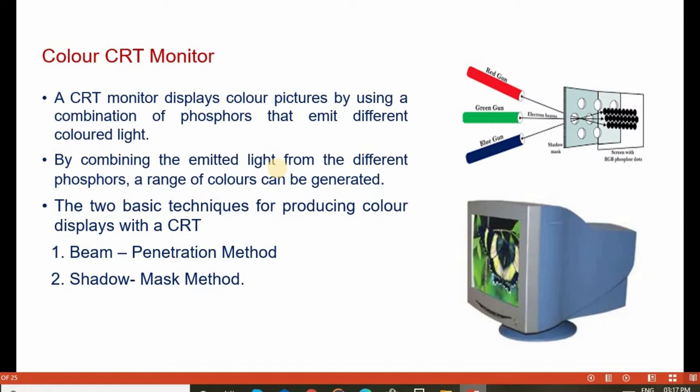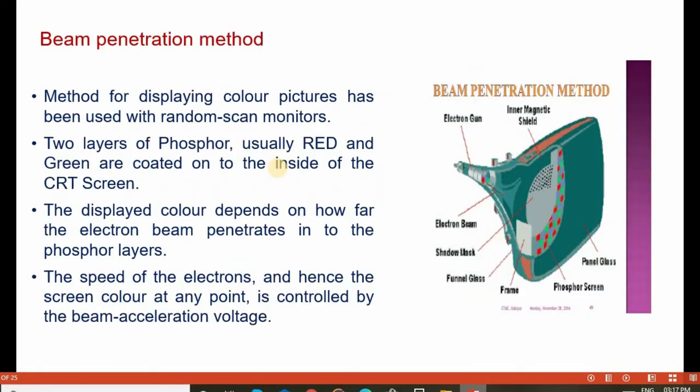There are two basic techniques for producing color displays with the CRT display device. The first is the beam penetration method, and the second is the shadow mask method.